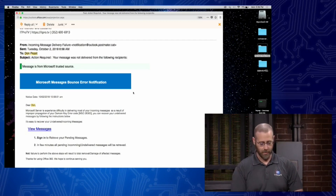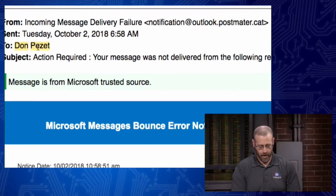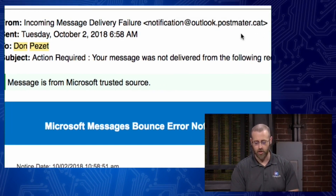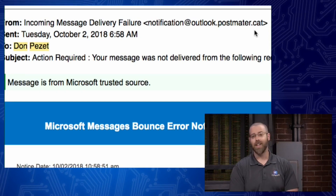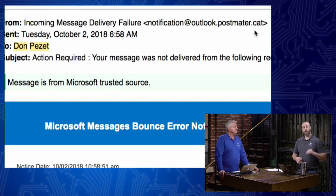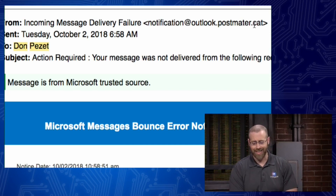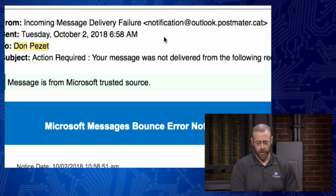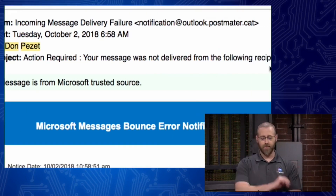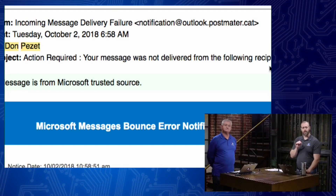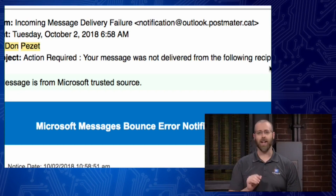You'll notice the subject says 'Action Required.' This looks very legitimate — but the sender is 'outlook.postmaster.cat.' That '.cat' domain rings red flags immediately. You might easily skim past it and think it said '.com.' We must be very cautious — actively, overtly looking for those little flags that tell you this is a problem.